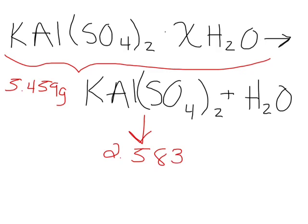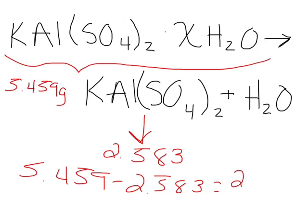So the first thing we have to do is find the weight of the water. What you do is subtract the total weight of the hydrate by that of the anhydrous. And that equals 2.876 grams of water.